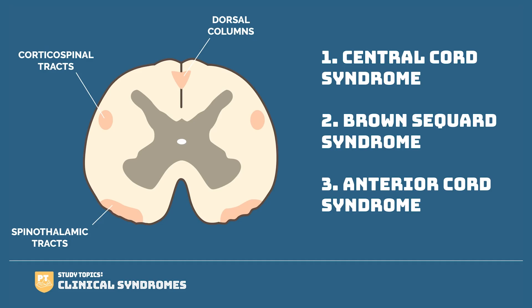Hello and welcome to Study Topics. This week we'll be covering a difficult subject: clinical syndromes. We'll be going over three clinical syndromes — central cord, Brown-Sécard, and anterior cord. What I want you to take away from this at the very start is that you need to understand the dorsal columns, corticospinal tracts, and spinothalamic tracts. This is going to make understanding your syndromes so much easier.